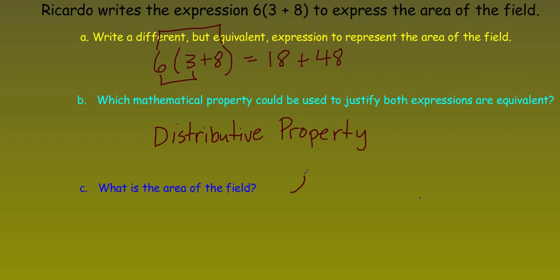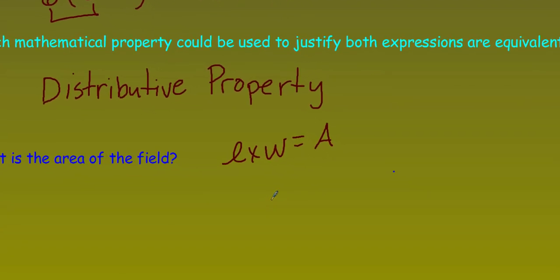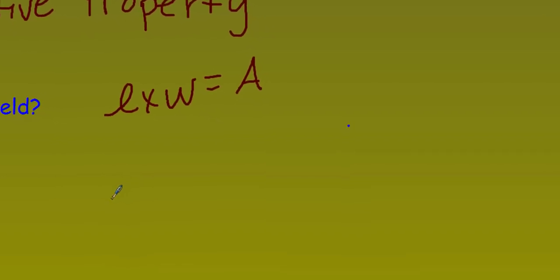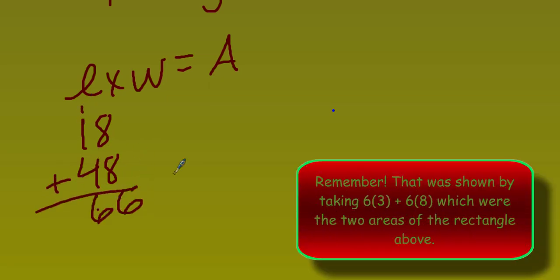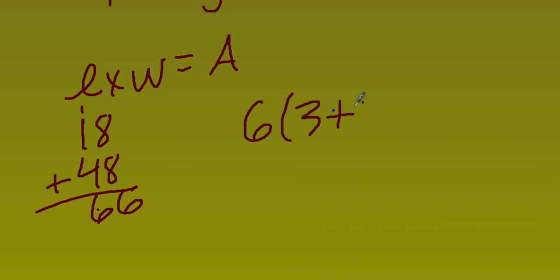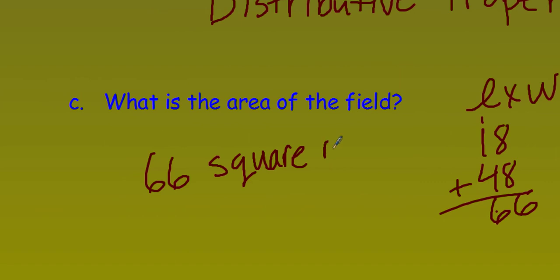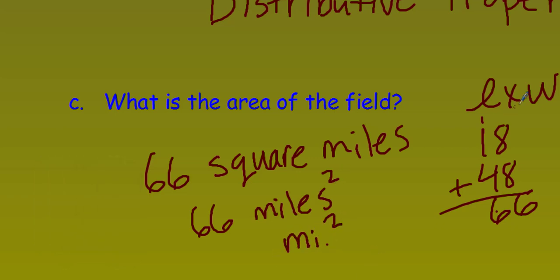Which mathematical property could be used to justify both expressions are equivalent? Well, you know what? We just talked about that. That's a good old distributive property. What is the area of the field? Now, the area is always length times width equals A. Our length there, in this particular problem, we had two, right? We had the three and the eight. We could take the six, which is the width, and just multiply it by that very first section of three and then eight. But since we already had 18 plus 48, we can just add those two together. We have 16, carry the one, that's five, so end up with 66. Now, remember though, 66 is square, and I believe it was miles. You could write it this way, or you could write 66 miles squared.